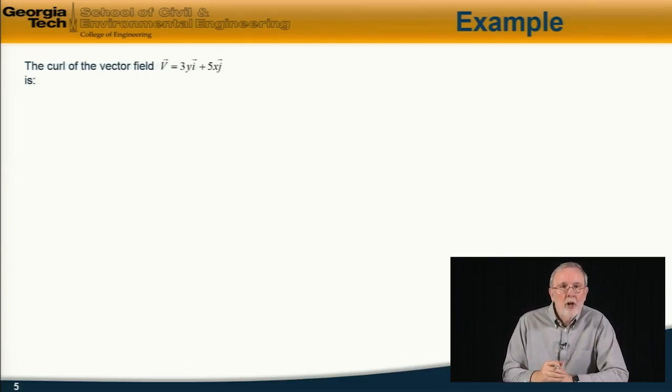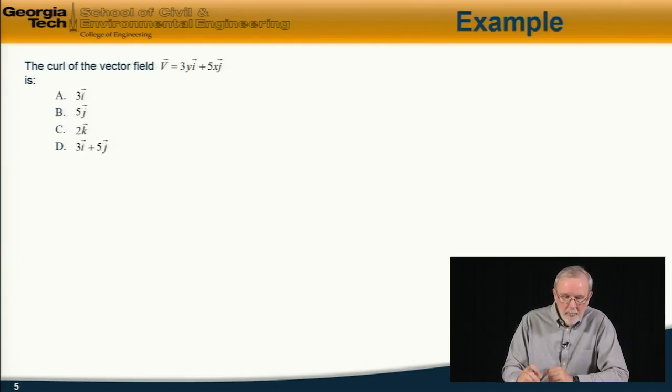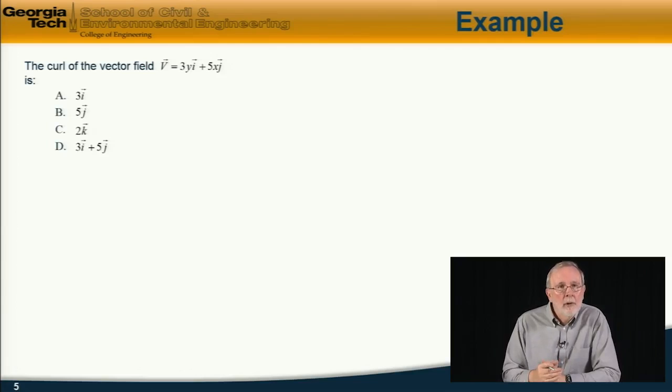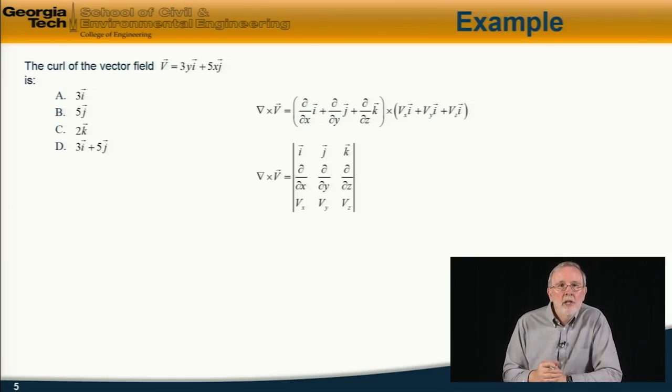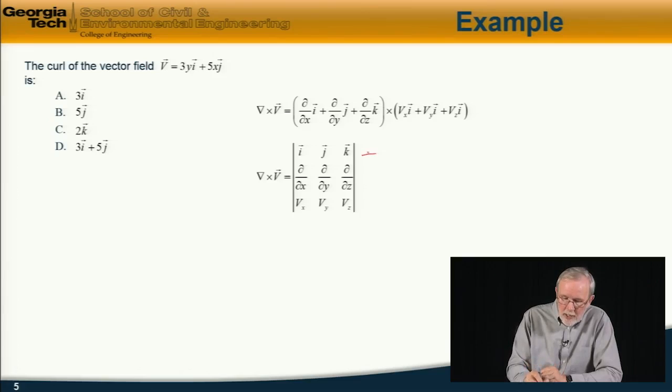Next, we'll compute the curl of that same vector field, 3yi plus 5xj. Which of these is it? And again, now we're dealing with a vector quantity because curl is a vector quantity computed from the cross product between the del operator and the vector field.